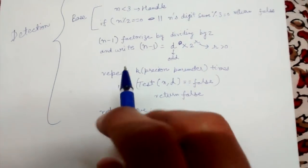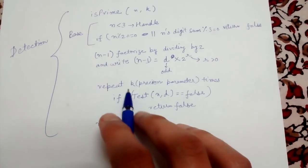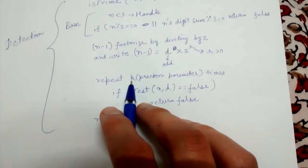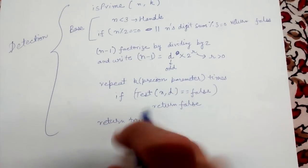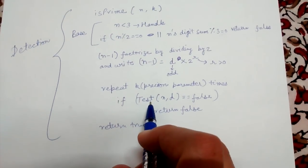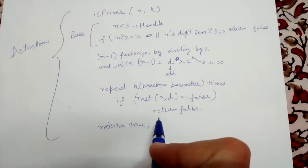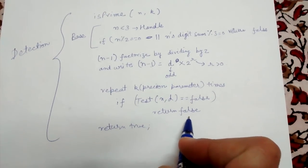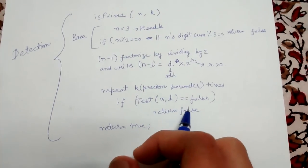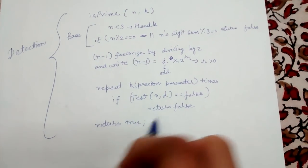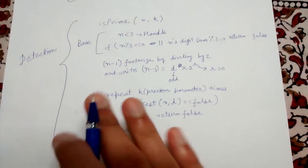We now repeat k times — this loop is performed k times, hence the precision is higher if we repeat it more times and lower if we repeat it fewer times. We call the test method with parameters n and d, and if it returns false we immediately return false, because we have determined that the number is composite and not prime. After all iterations, if we never get a false value, we return true, meaning the number is prime.